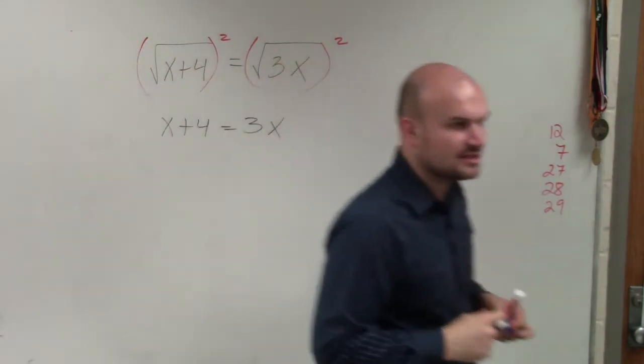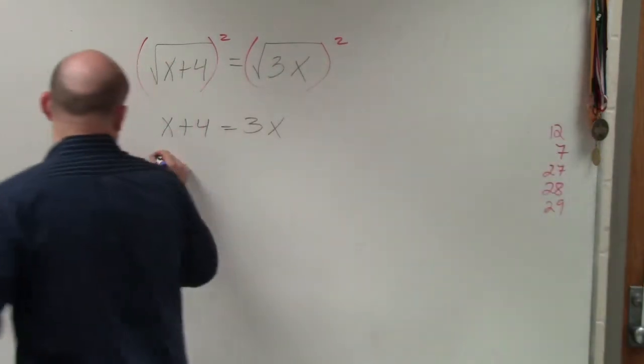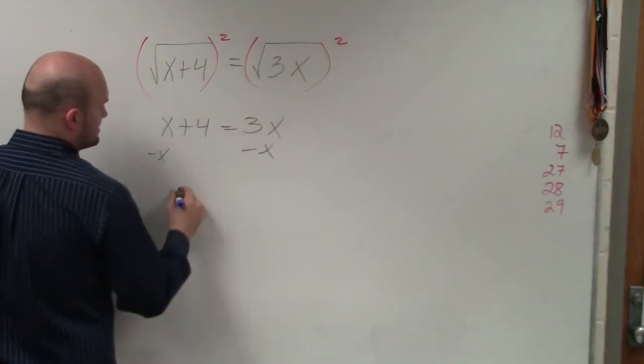So I'm just left with x plus 4 equals 3x. Now, this isn't so bad. You guys can hopefully remember how to solve from here. You just solve for x. You isolate the x. So I get the x's on the same side.